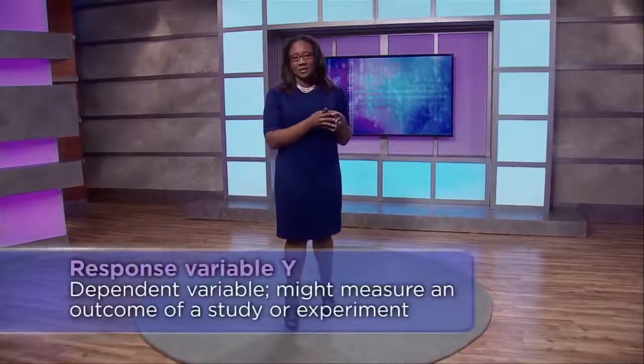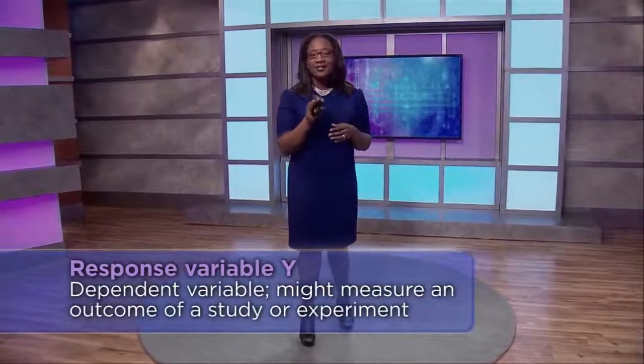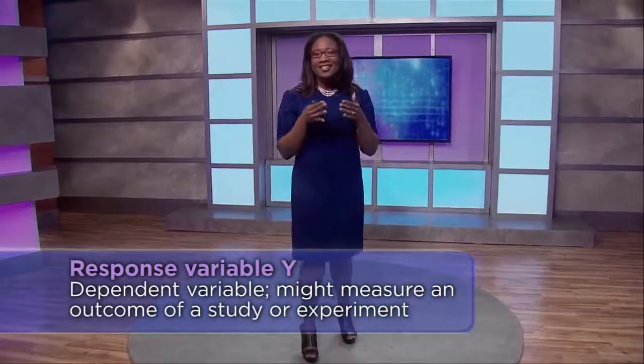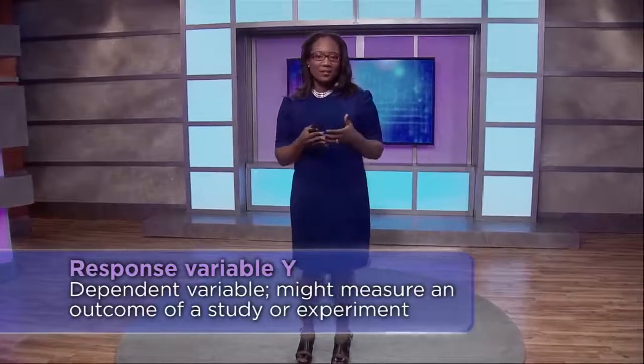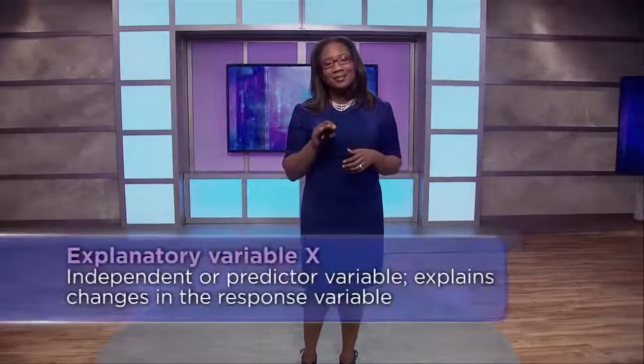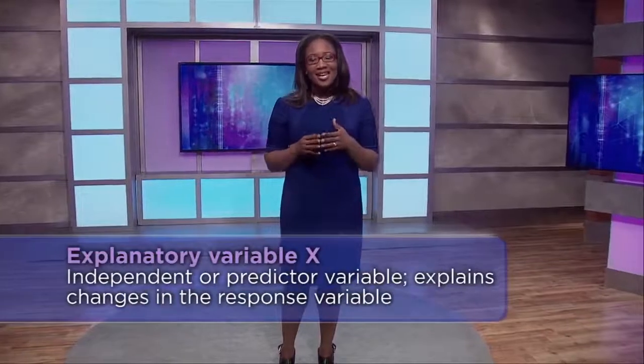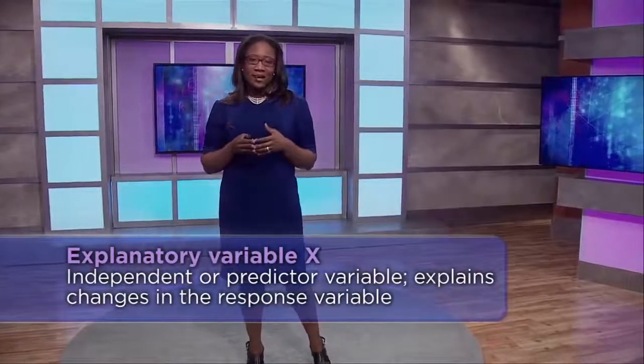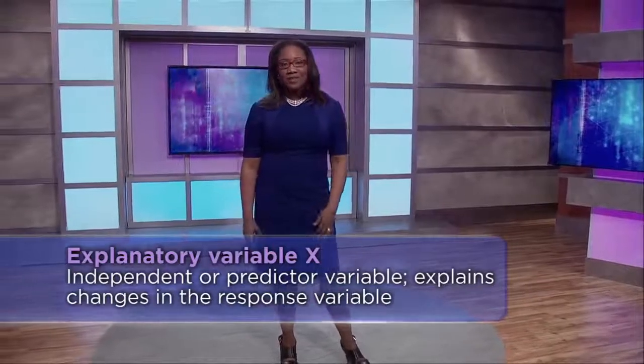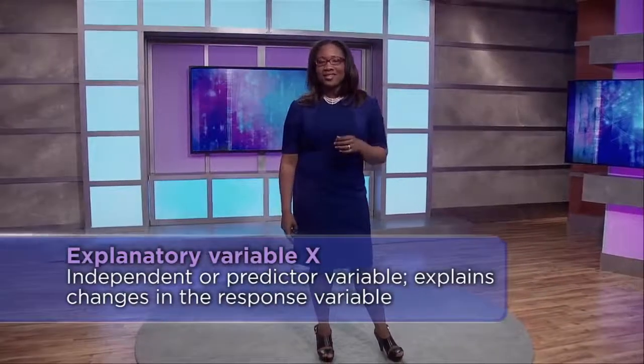Now linear regression deals with some really interesting things. We're first going to start with a response variable y — this is our dependent variable, the target, what we might use to measure the outcome of our study or experiment. We also need variables that will help us explain that response, and we call that the explanatory variable — that's x. X is our independent variable, also called the predictor variable. We're going to use it to explain the changes in our response, going from two independent sets of observations to pairs — each x₁ is paired with a y₁.